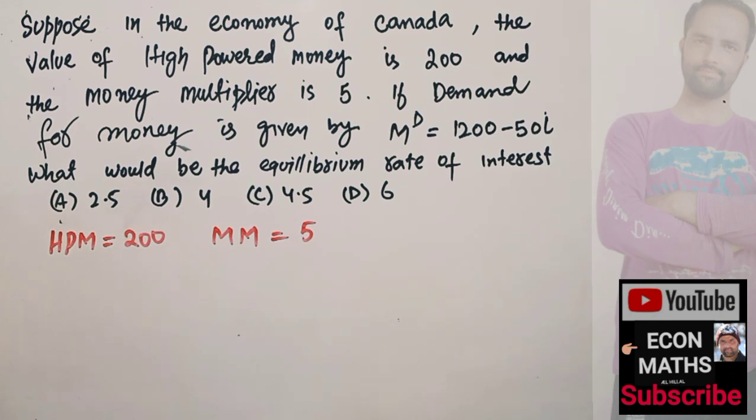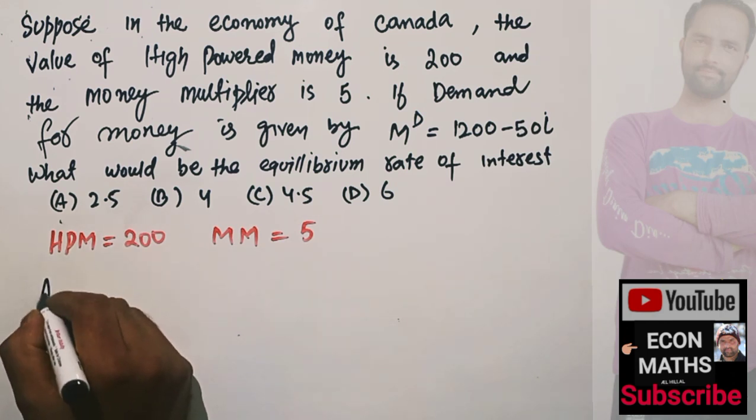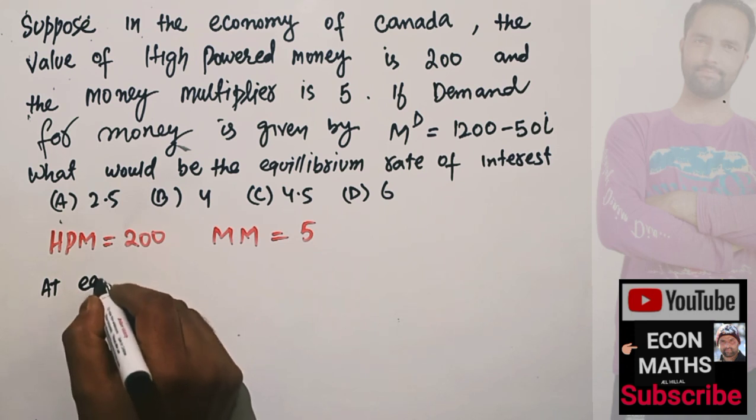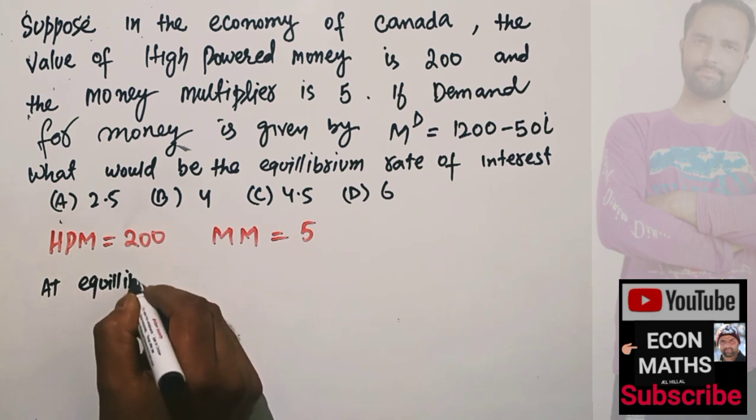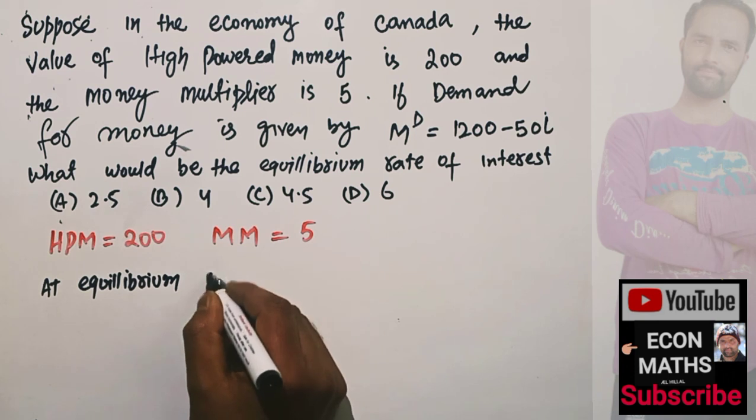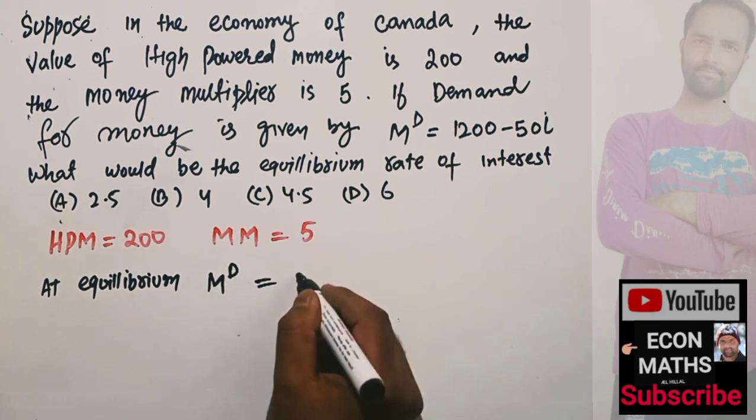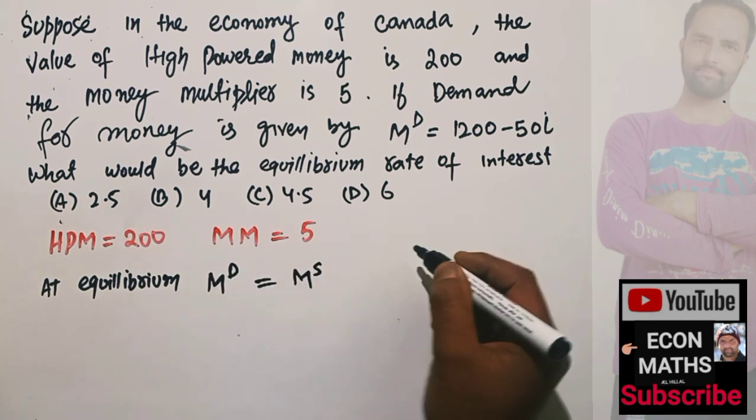We know that at equilibrium, money demand should be equal to money supply. We are given that money demand is equal to 1200 - 50i.